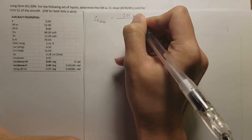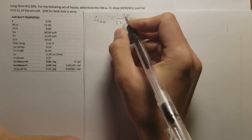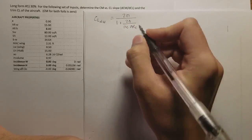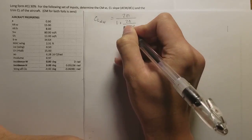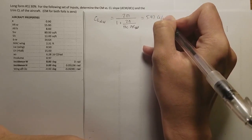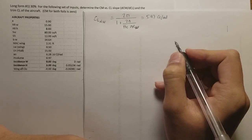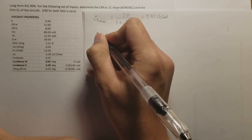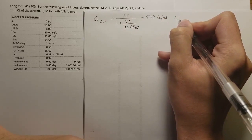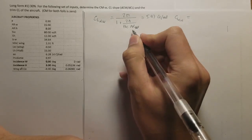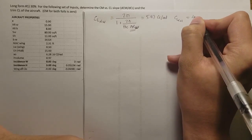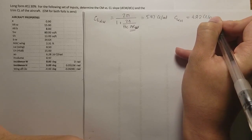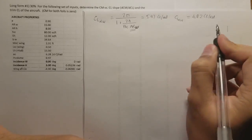Given all of these aircraft property values, we need to first find the CL alpha of the wing. This is a very general solution equation for every aerospace engineer. When you put in the numbers from the table, you should get 5.47 per radian. It is also the same for CL alpha of the tail — putting everything in except for the aspect ratio, you should get 4.92 per radian.